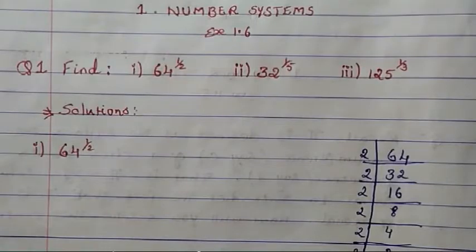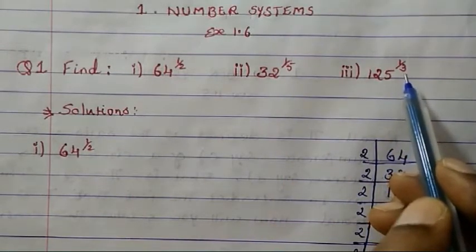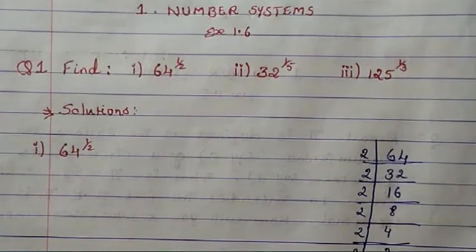Hello students, Sister Mary here. Welcome to 9th Maths NCERT Chapter 1: Number Systems. Today we will study from Exercise 1.6, Question 1: Find 64^(1/2), 32^(1/5), and 125^(1/3). Let's find out the solution for this.